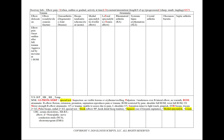Starting with an elbow dislocation, our supporting points will include elbow pain, an onset that's sudden after a fall or trauma, and it will be aggravated by movements. We'll note a decreased range of motion in our physical exam.